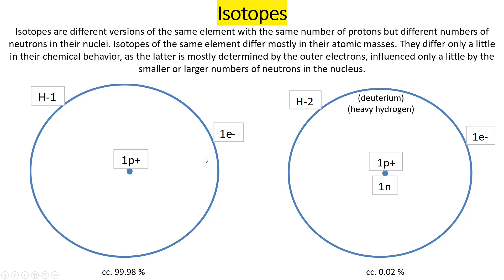You can see what is the same in the two hydrogen isotopes: the number of protons — both contain one proton — and the number of electrons — both contain one electron. You can also see the difference: isotope H1 contains zero neutrons, while isotope H2 contains one neutron. The number after the chemical symbol — one for H1 and two for H2 — is called the mass number of the isotope.